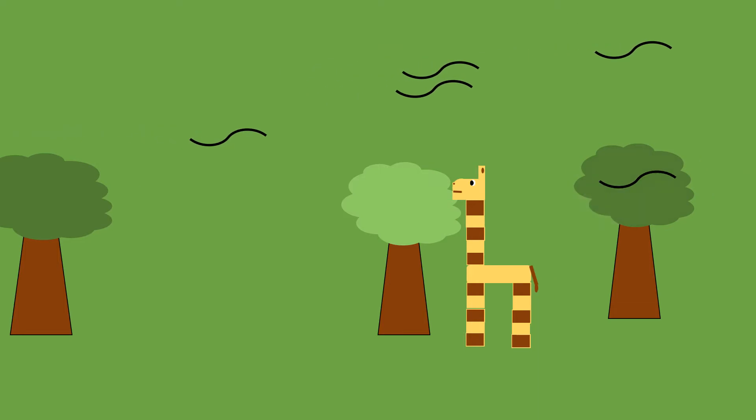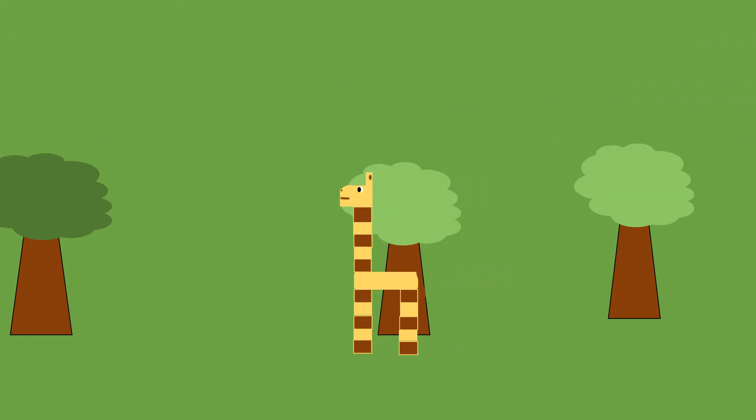When it does this, an accompanying chemical is released into the air that alerts nearby trees to the danger so that they can make their leaves taste bitter as well. This forces the giraffe to move a good distance upwind before eating too many of the local trees.